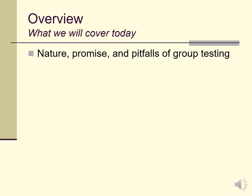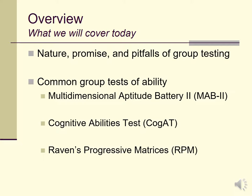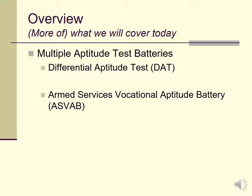Let's take a look at an overview. I'm going to talk briefly about the natures, the promises, and the pitfalls of group testing — basically the advantages and disadvantages of this whole approach to ability testing. I'm going to talk about a few common group tests of ability, some of which you might recognize, certainly Raven's Progressive Matrices. Then we'll finish up by talking about multiple aptitude test batteries, and along the way I'll highlight a few important points about all of these types of group tests.